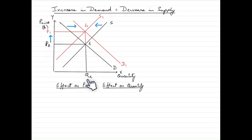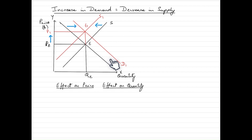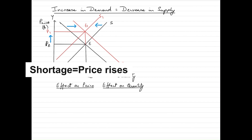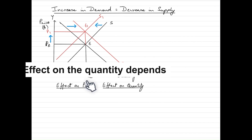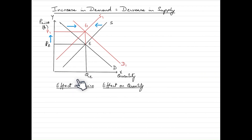The initial equilibrium in this market is at point E, with the price at Pe and quantity at Qe. When both an increase in demand and a decrease in supply occur simultaneously, their combined effects will create a shortage scenario in this market — because demand is going up and supply is going down, so there's not enough for everybody to buy. The net effect on equilibrium price would be to raise it, since a shortage puts upward pressure on prices. The effect on equilibrium quantity is ambiguous, as it will greatly depend upon the magnitude of these changes.